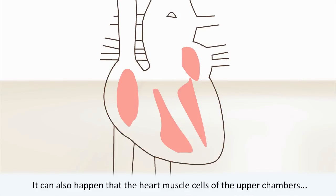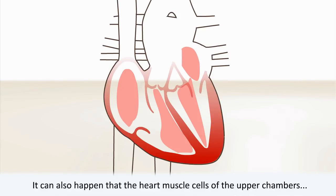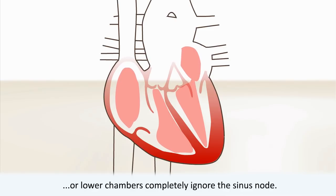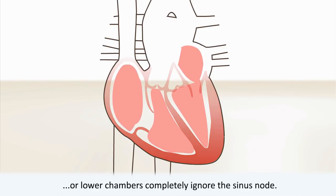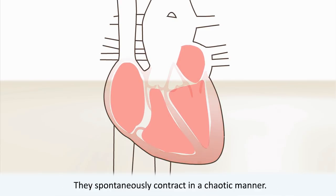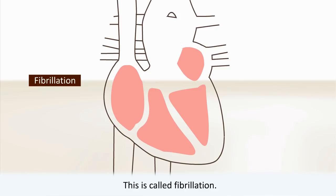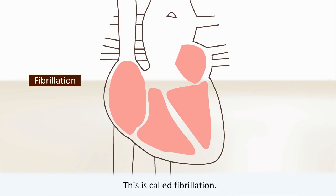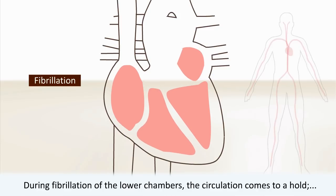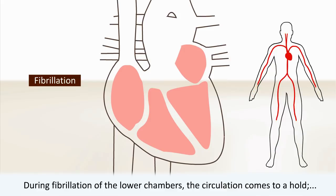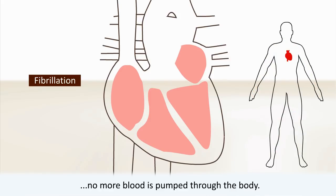It can also happen that the heart muscle cells of the upper chambers or lower chambers completely ignore the sinus node. They spontaneously contract in a chaotic manner — this is called fibrillation. During fibrillation of the lower chambers, the circulation comes to a halt. No more blood is pumped through the body. This is a life-threatening situation.